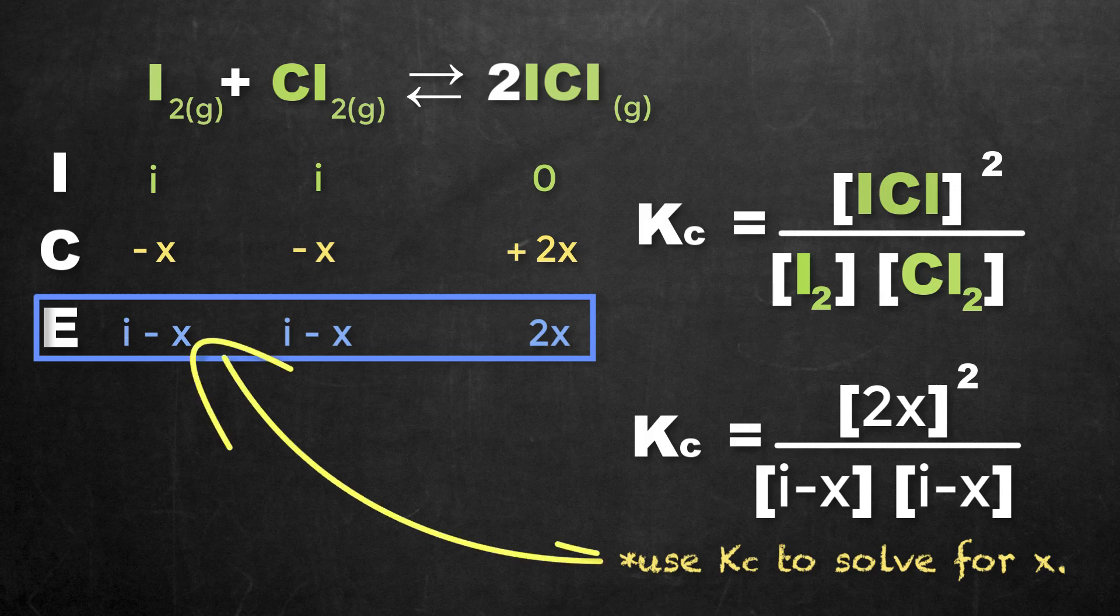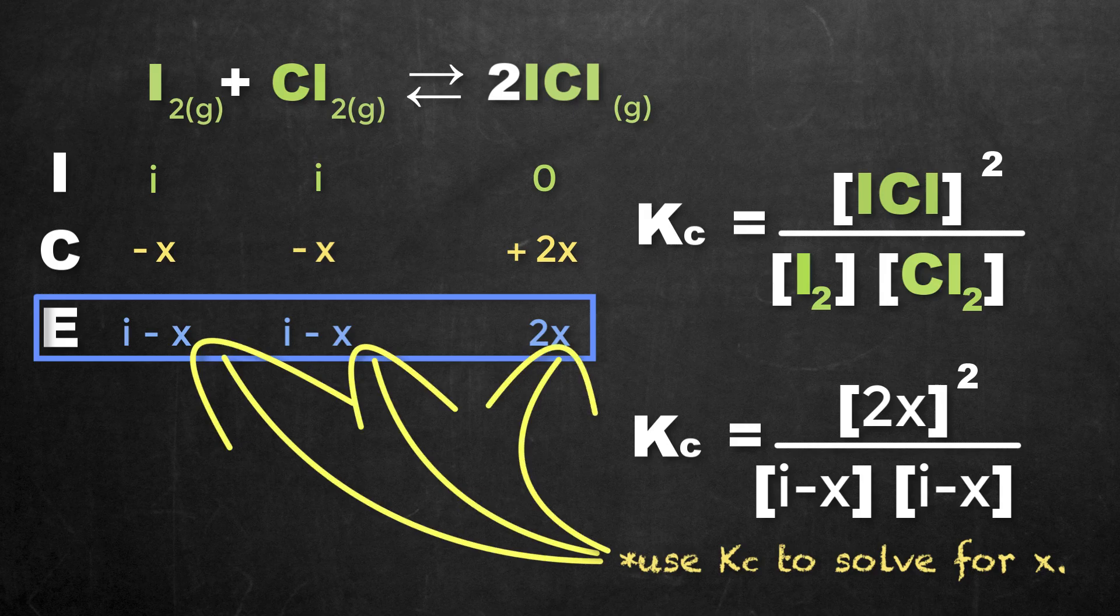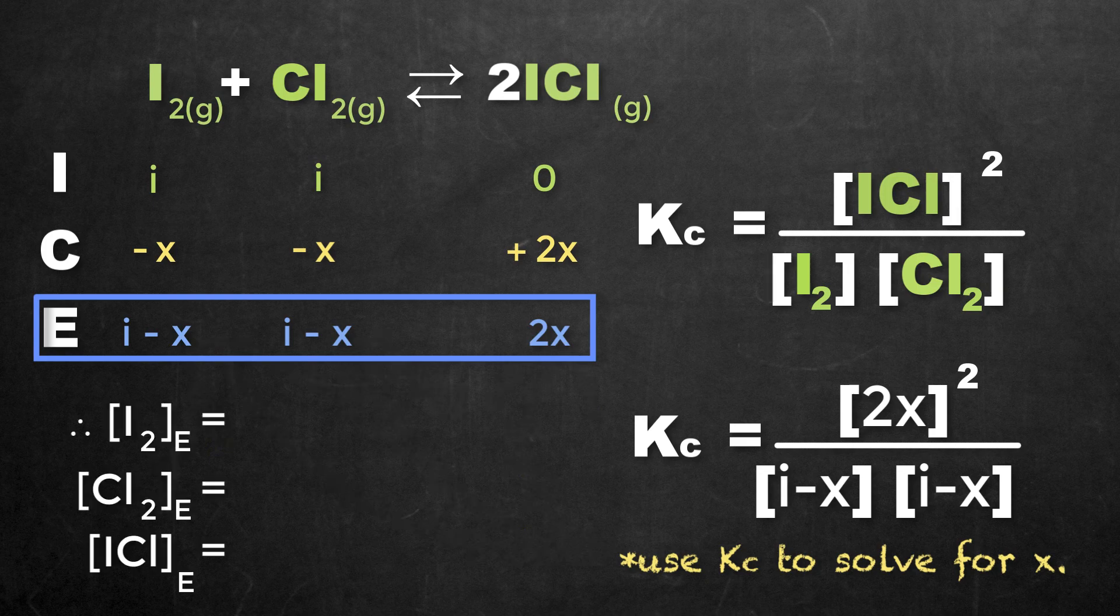And once you know your X value, you can then sub that into the values that are in the equilibrium concentration, or E row, of the ice table, and then ultimately figure out what your equilibrium concentrations are.